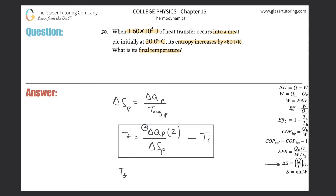So the final temperature equals 2 multiplied by the change in heat — which is 1.6 times 10 to the fifth joules — divided by the change in entropy, which is 480 joules per Kelvin, minus the initial temperature. The temperatures are in Kelvin, so the initial temperature is 20 degrees Celsius plus 273.